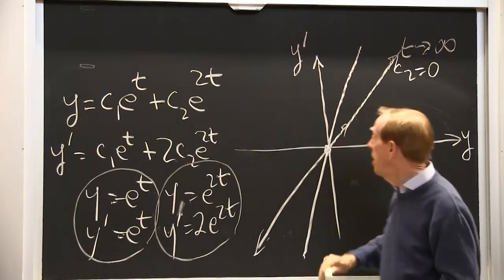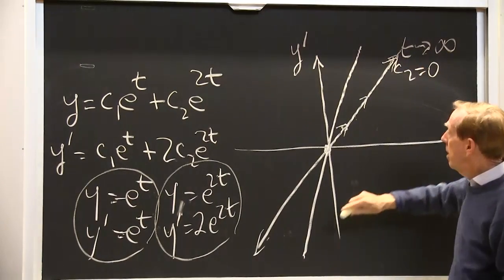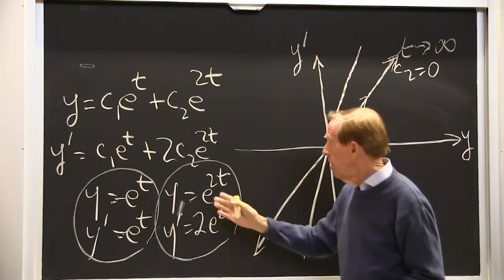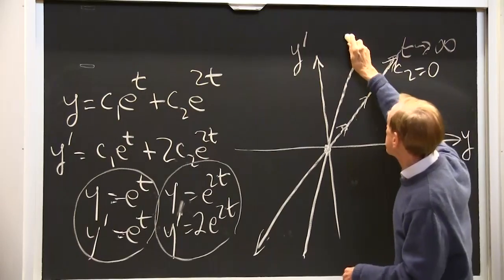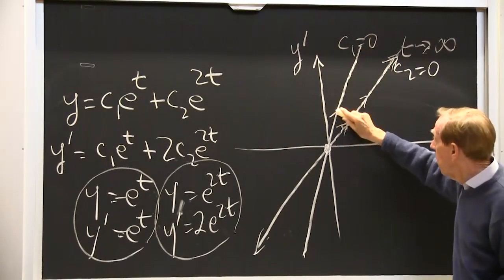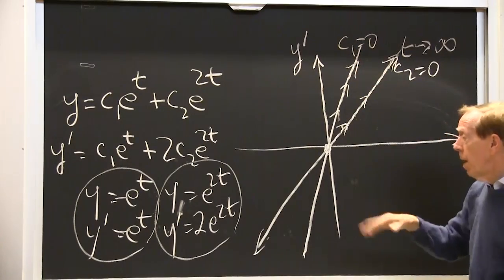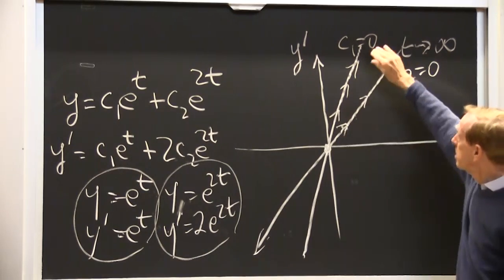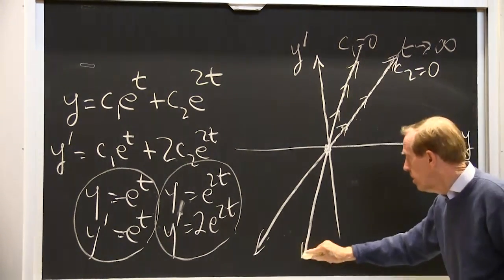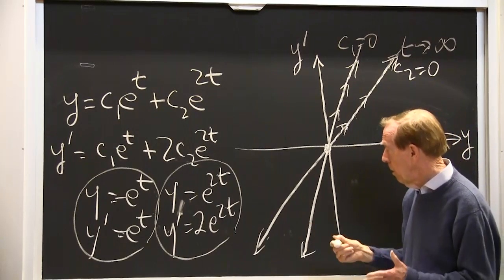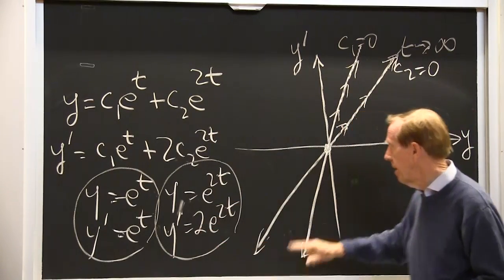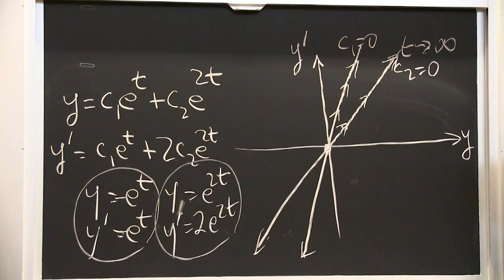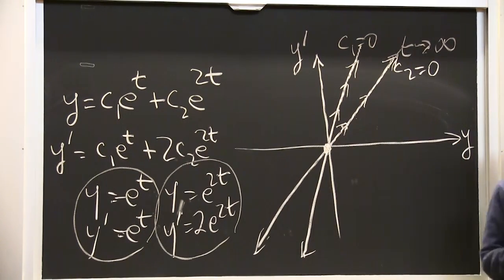There was no e to the 2t on that first line that we drew. In the second line that we drew, c1 is 0. There's no e to the t. Everything is in e to the 2t. So now c1 is 0 on this line. And we just go out it. As t increases, y prime increases faster because of the factor 2. So it goes up steeply. And it goes this way when c2 is negative. If I took a minus and a minus, I would just go down the other way on the same line. This is still the big bang, t equal minus infinity.